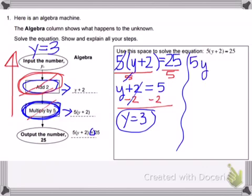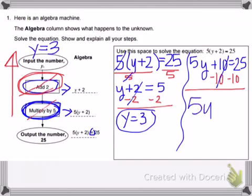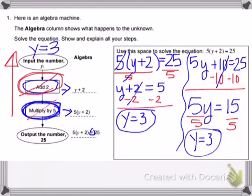Of course you can. You would distribute, and you'd get 5y plus 10 equals 25. Then you would subtract 10 from both sides. And then after you subtracted 10, you'd be left with 5y equals 15. And then you would divide both sides by 5, which would yield an answer of y equals 3. Same solution.